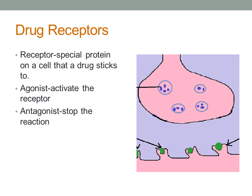As we begin pharmacology basics, drugs don't create any new responses in the body, but they change an activity that is happening. Most drugs are created to bind to a receptor to cause an effect. A receptor is a specialized protein on a cell that drugs bind or stick to. A medication is like a key looking for the right lock or the right receptor. Once the receptors are activated, they trigger a specific response in the body, like the release of neurotransmitters or hormones.